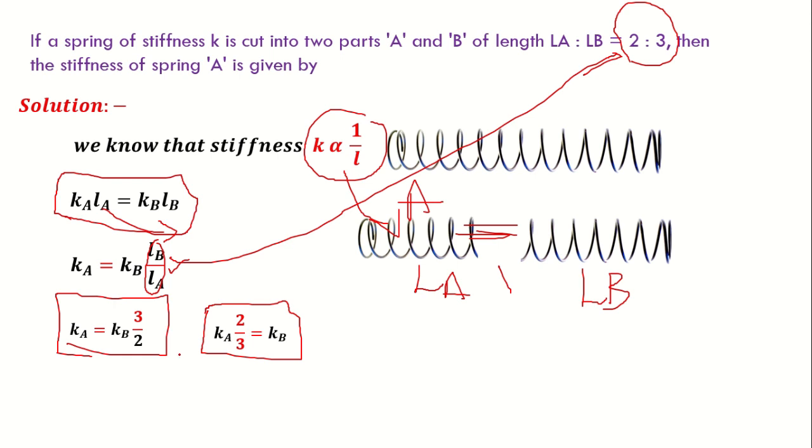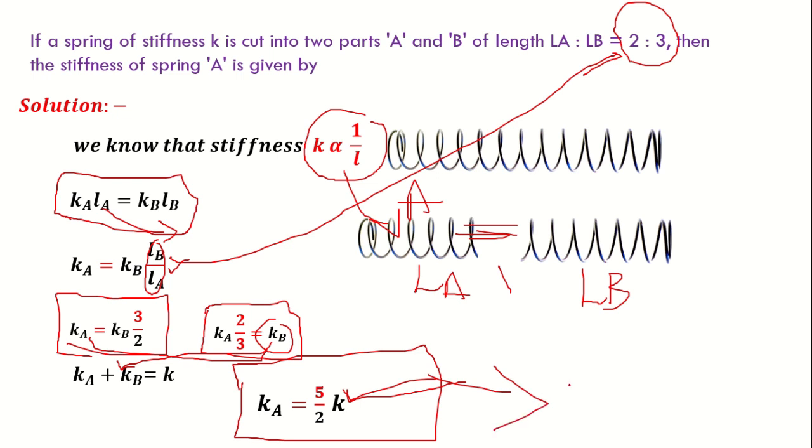We know that total stiffness equals K, which equals KA plus KB. Now if I substitute this KB into this one and solve it further, I will be getting KA equals 5 upon 2 K. So this is the stiffness of spring A.